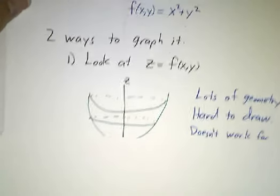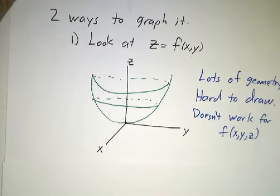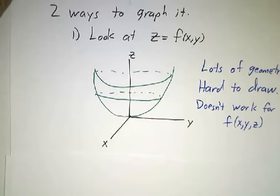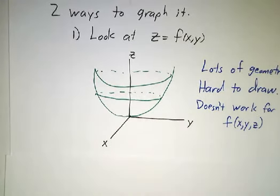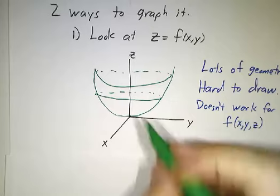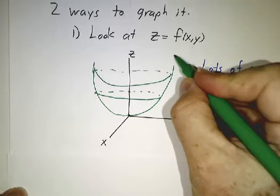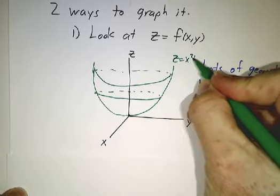There are two ways. One is to draw the graph. Now the graph needs an extra variable. So we let z be f of x, y. And there you go. This is the curve z equals x squared plus y squared.